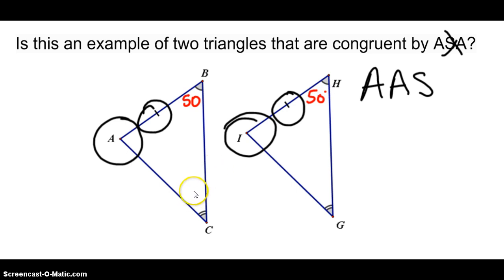What would you then know about angle A and angle I? They would each have to be how many degrees? 70. So we could actually deduce here that angle A is congruent to angle I.